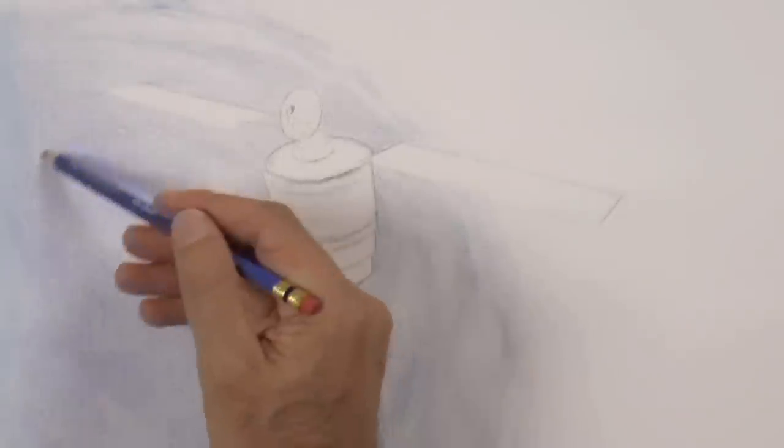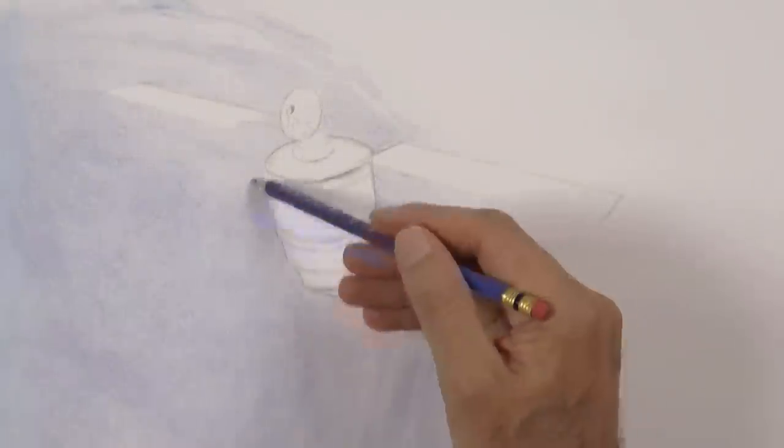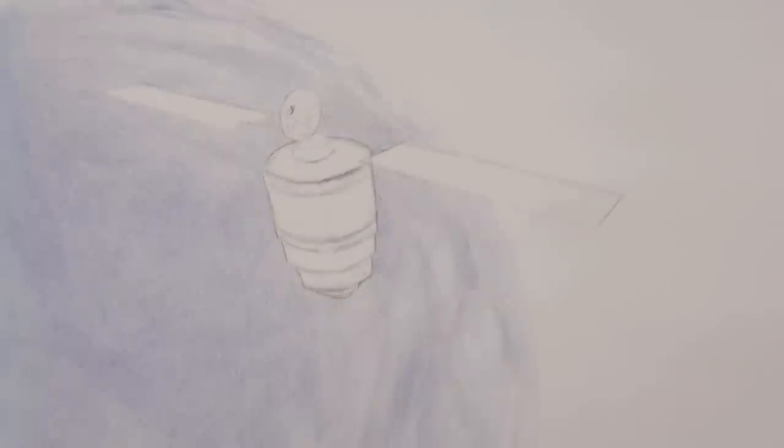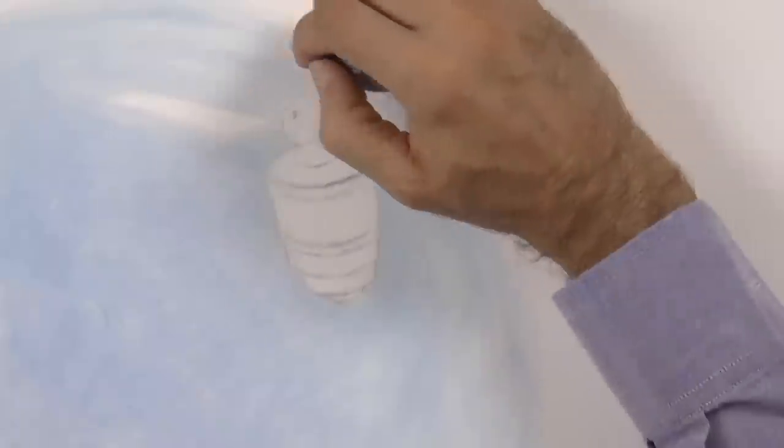We finish coloring the planet's surface and then with a cloth, or preferably with a chamois, we smudge it. As you can see, this changes its appearance. And with a kneaded eraser or a regular eraser, we do the clouds.